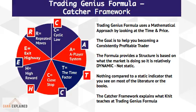Welcome to Trading Genius Formula, CATCHER framework walkthrough. The goal of Trading Genius Formula is to help you become a consistently profitable trader. The formula provides structure that is based on what the market is doing, so it's relatively dynamic, not static — not like Fibonacci ratios, pattern recognition, or any kind of technical indicators you've used before. It takes the guesswork out of market entries and exits.